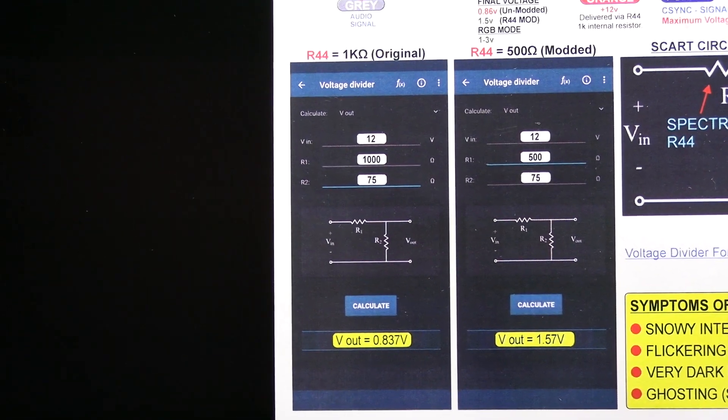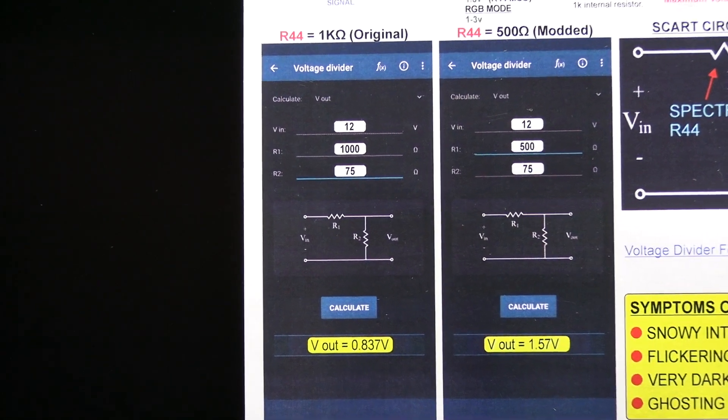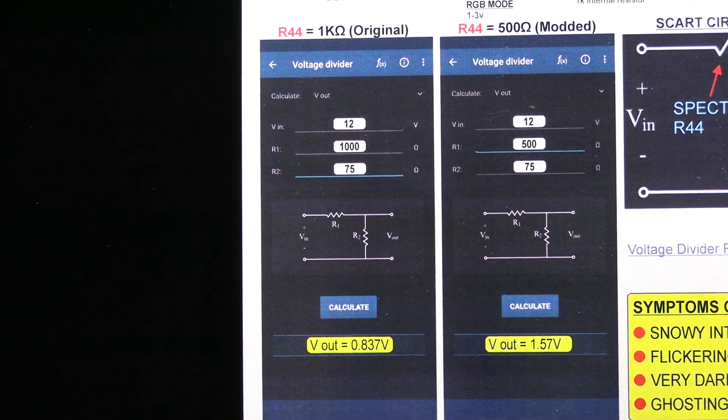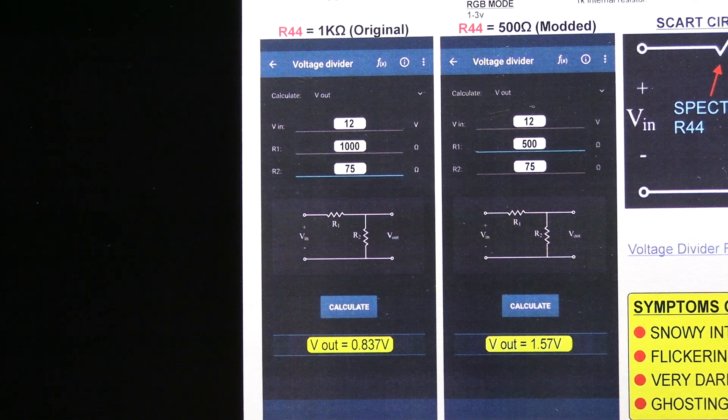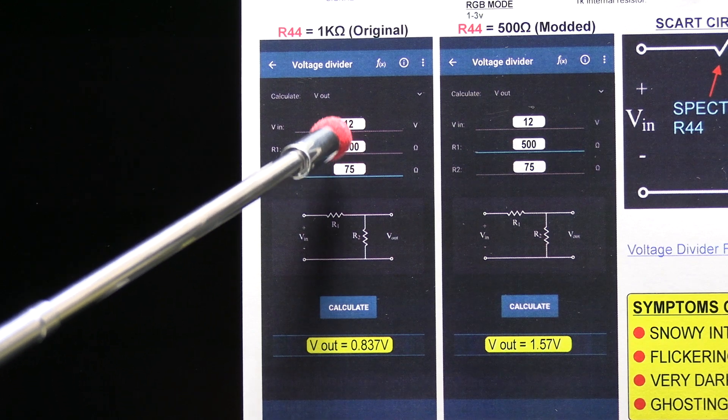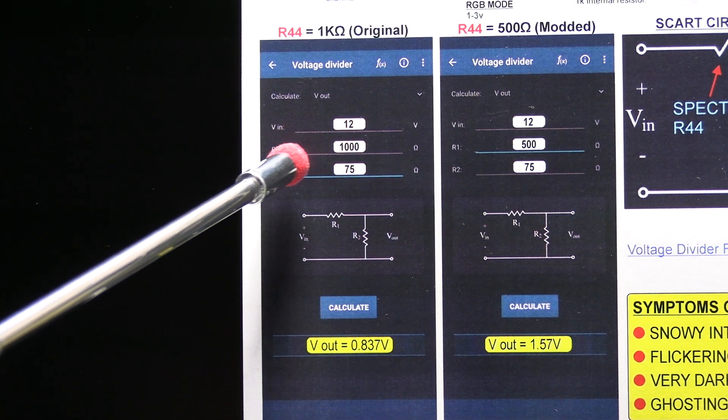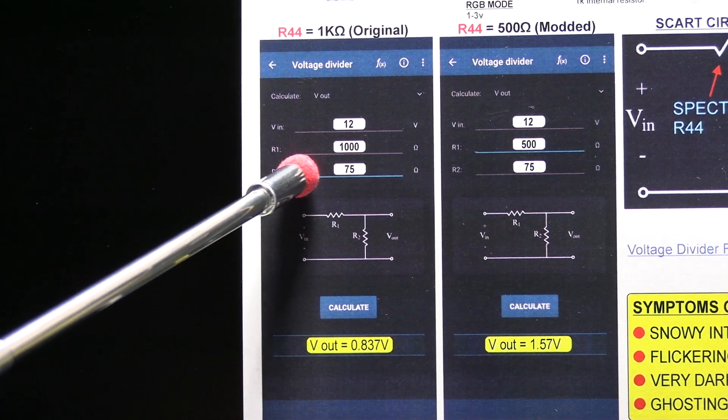And the reason you get a voltage of about 0.86 volts, not 0.3 volts, not 0.8 volts even, is because of the way it's calculated. So we've got this with the original 1k resistor fitted. And you've got a voltage input of 12 volts. The resistor value in the calculation is 1000 ohms, R1k.